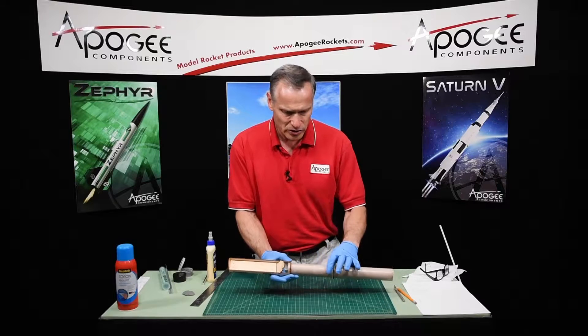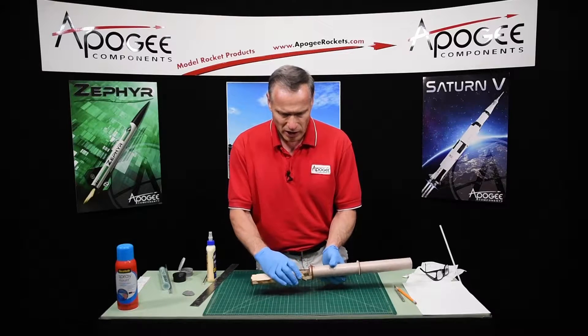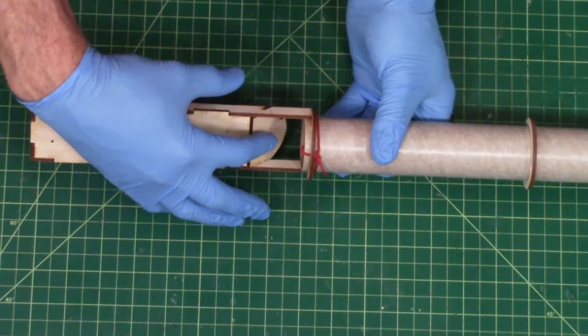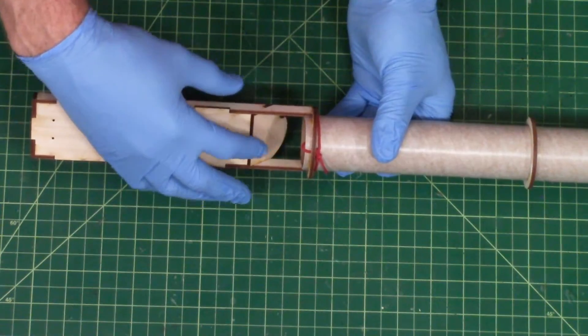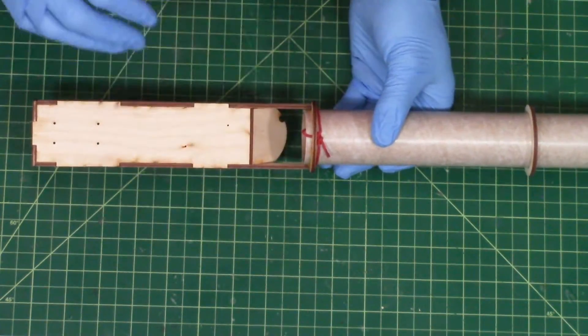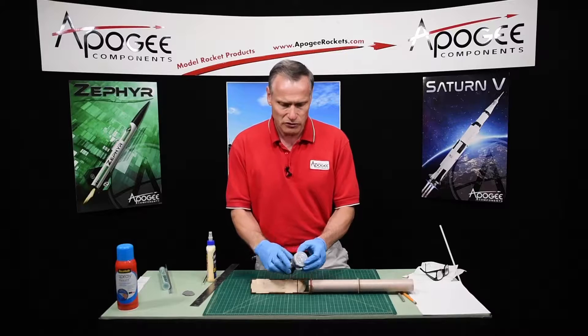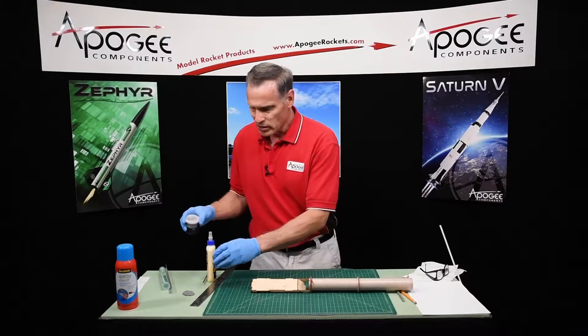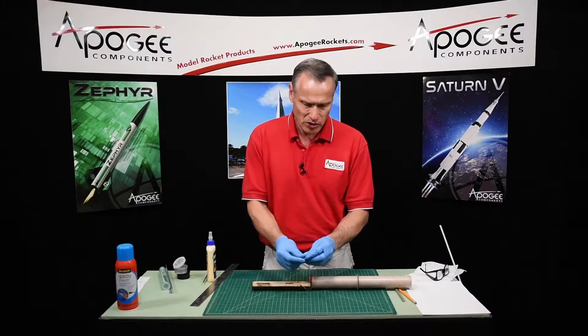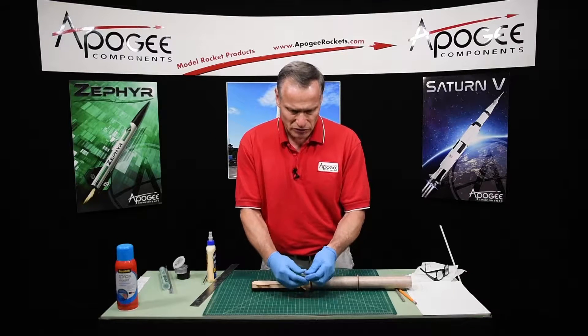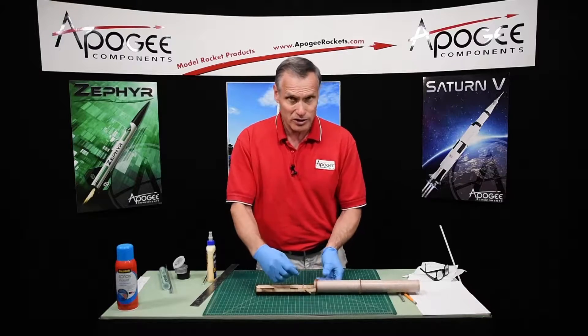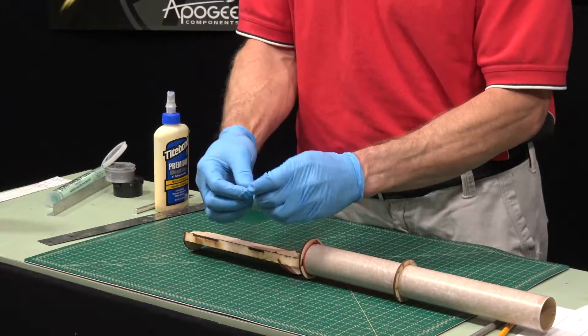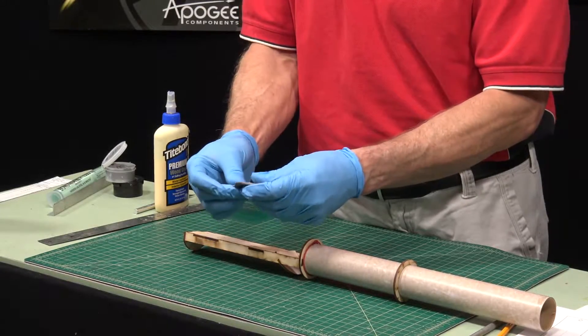Our next step here is to glue this ring into place, and I also want to reinforce this. This part right here is going to get hit with the ejection charge blast, so I want to cover that with epoxy. For that, I'm using the Fix-It Epoxy Clay. It's an equal glob of each side, and I've already pre-mixed it up here. So what I want to do is to flatten it out and then cover this, and it doesn't have to be very thick.